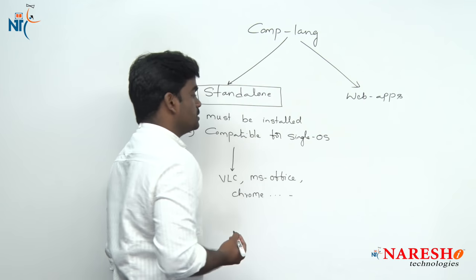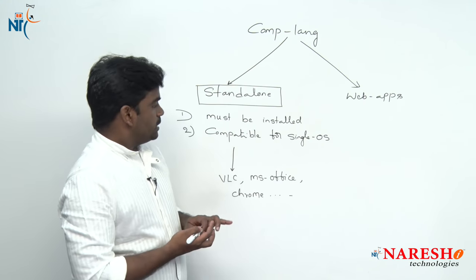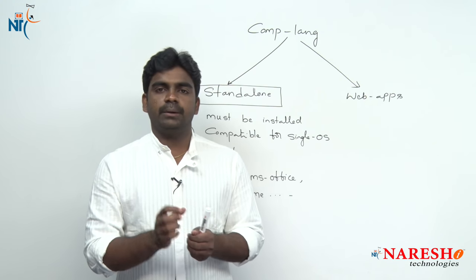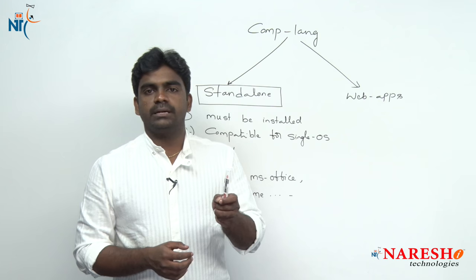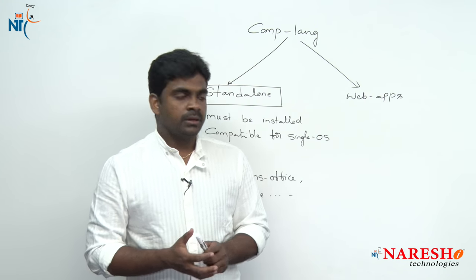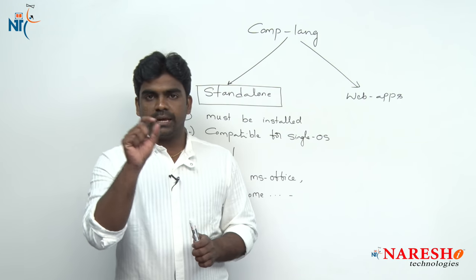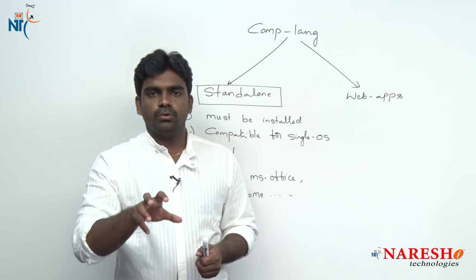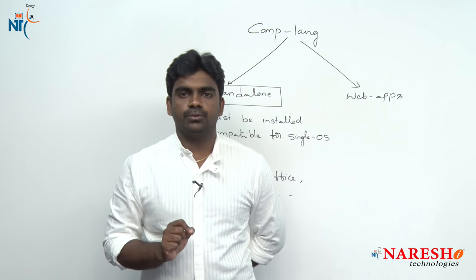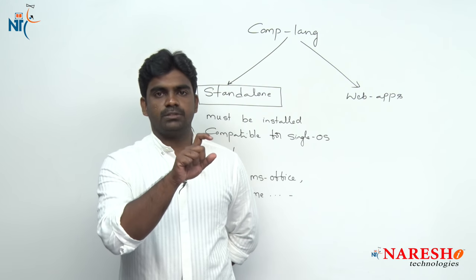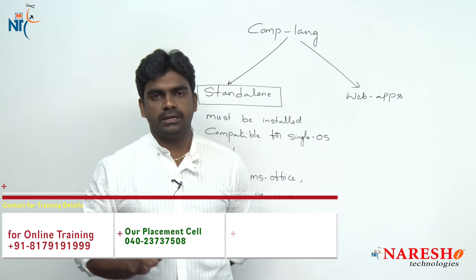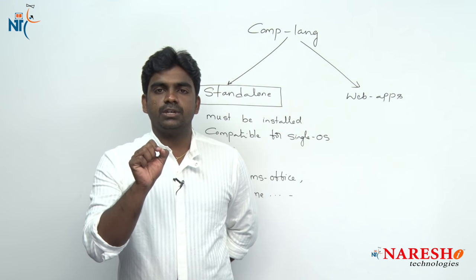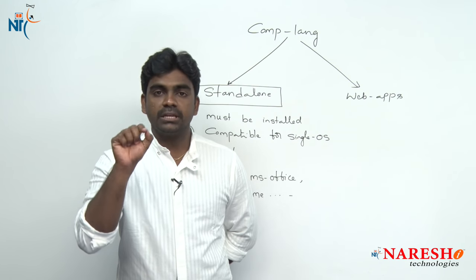A second key point is that standalone applications are always compatible for a single operating system. For example, if you download MS Office, you have to specify which operating system you are using. The website will show MS Office for Windows, MS Office for Mac, and Office software for Linux — because the application is always dependent on an operating system.